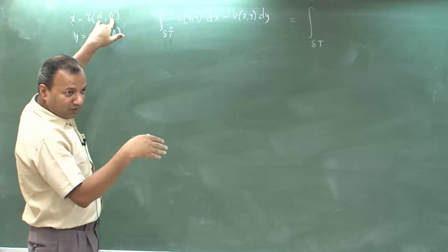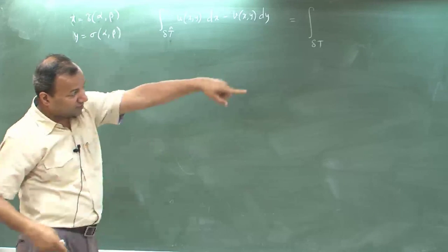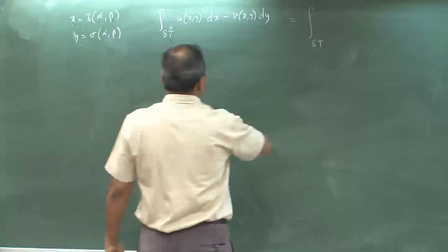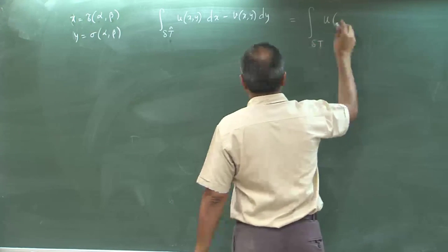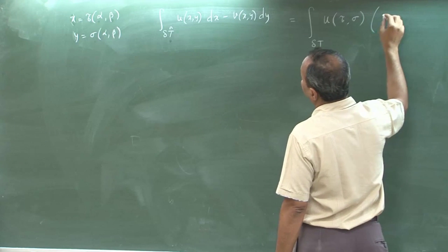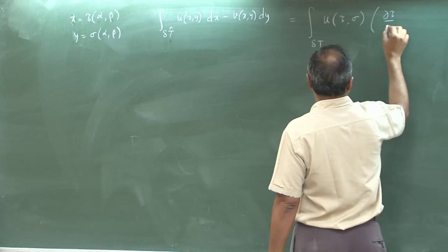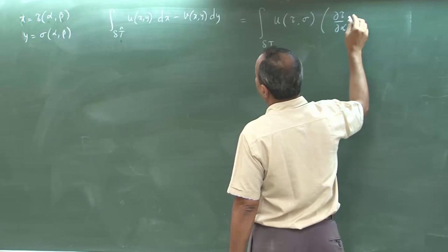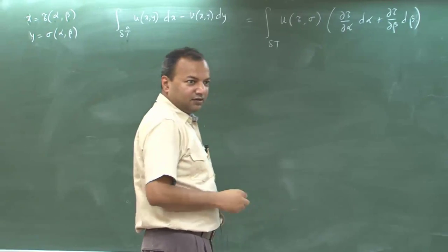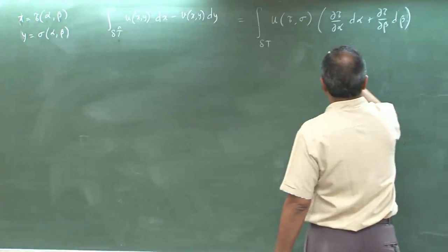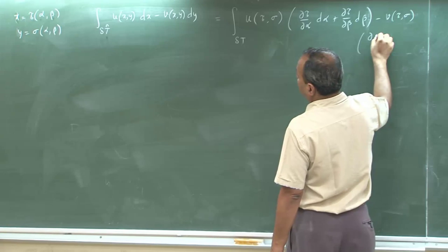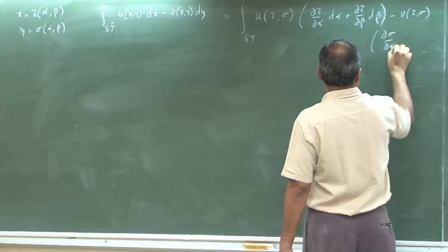Here I am assuming there is one coordinate system given by α and β on which the standard triangle T exists, and I am mapping using τ and σ to the x-y coordinate system on which T-hat lives. So this can be rewritten as u(τ, σ) · (∂τ/∂α) dα. This is standard differential analysis: dx = (∂τ/∂α) dα and dy = (∂σ/∂α) dα, and similarly for the v term.